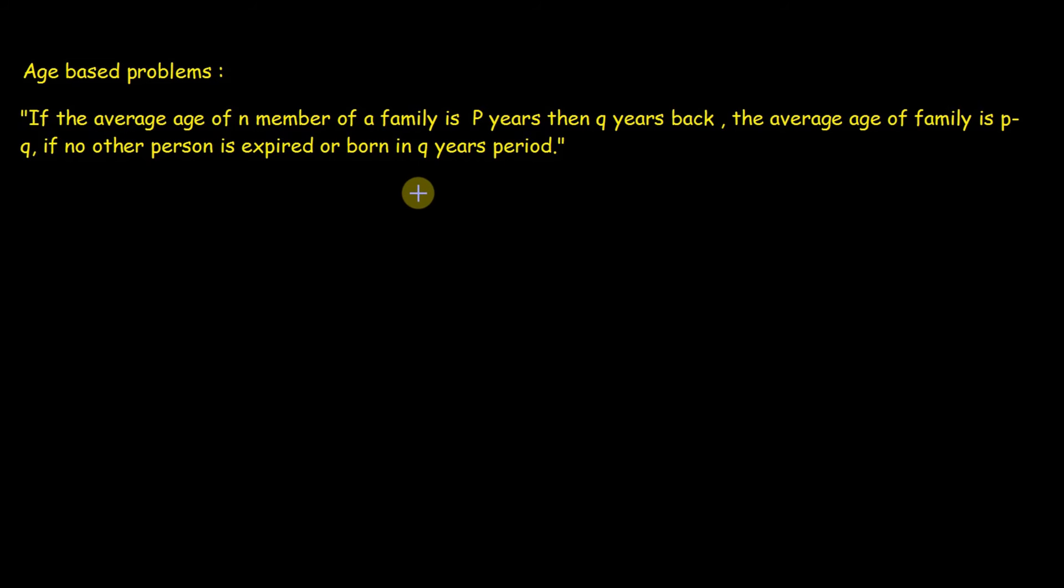That's a pretty simple concept. Suppose average age of 5 members of a family is 15 years, then 3 years back average age would be 12 and the same way 5 years after average age would be 15 plus 5 equal to 20.